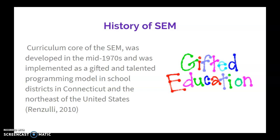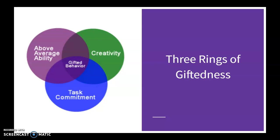One of the main components of this model is called the Three Rings of Giftedness: Above-Average Ability, Creativity, and Task Commitment. According to Renzulli, these three traits combine and interact with each other to form creative accomplishment or gifted behaviors. Students who exhibit or have the potential to exhibit sufficient levels of these traits require distinct opportunities and challenges above and beyond what's offered in the regular classroom.